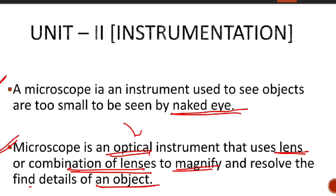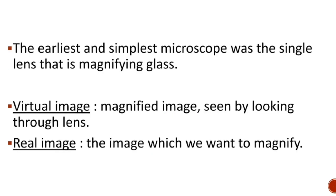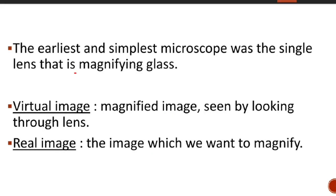It uses one lens or a combination of lenses so that we can magnify the object and resolve small details. We can see the object in a magnified version — small details become visible in large shape. We cannot see very small things with the naked eye, but we can see them through the microscope.